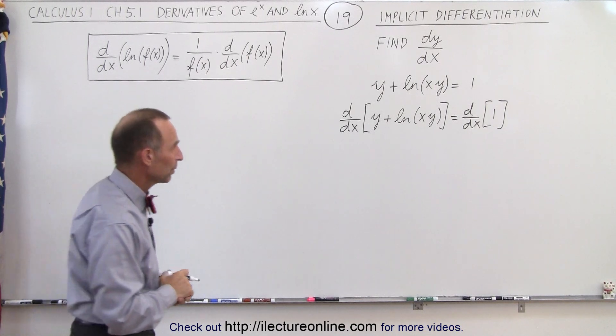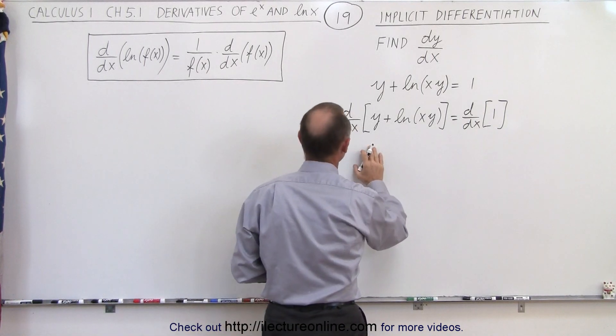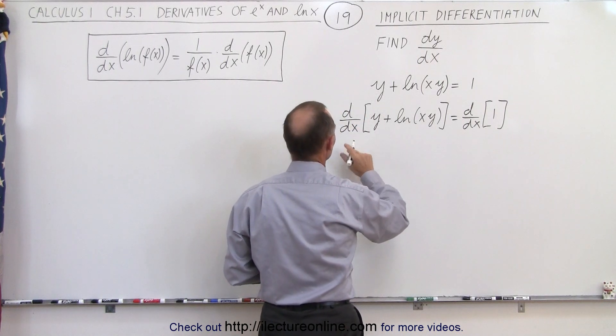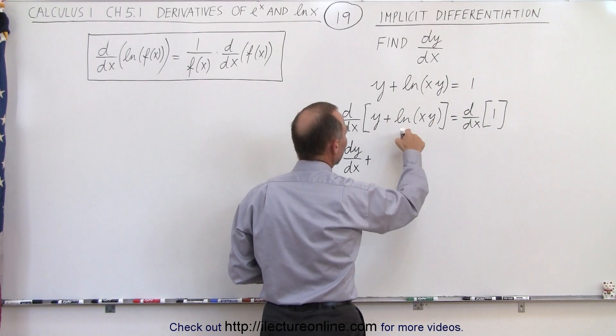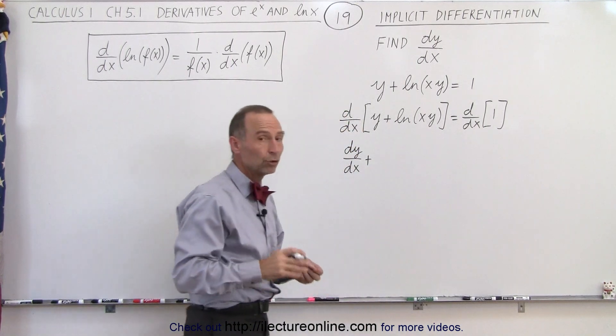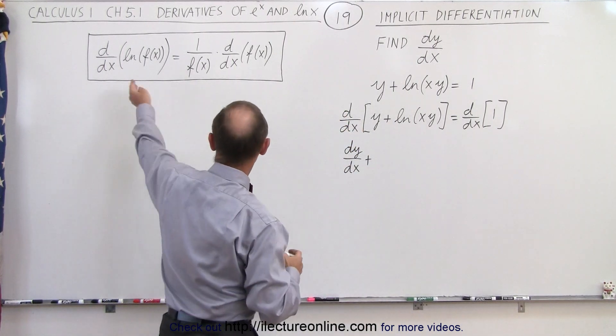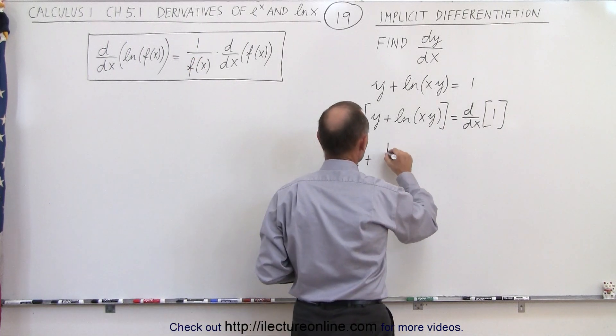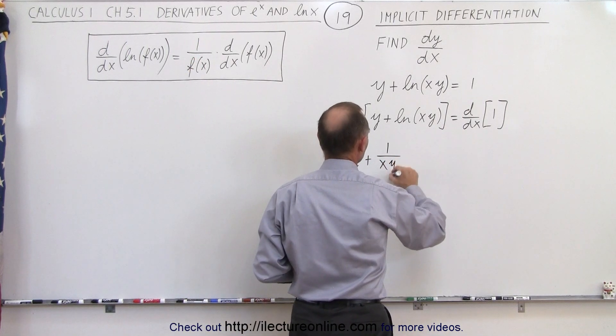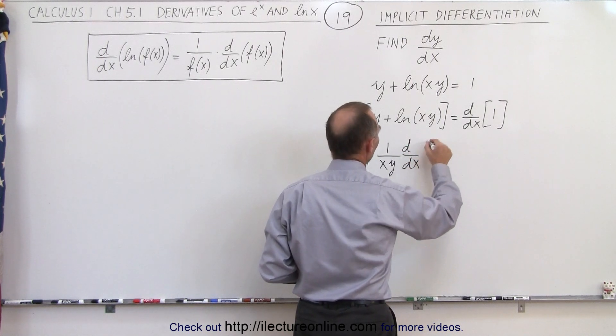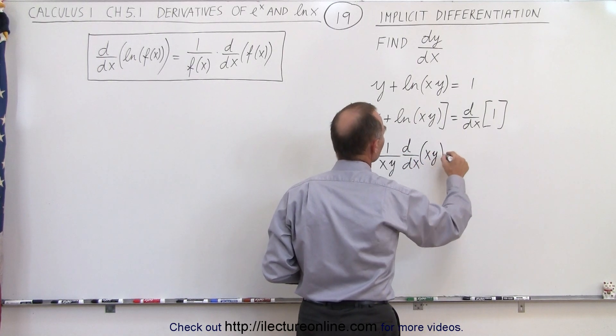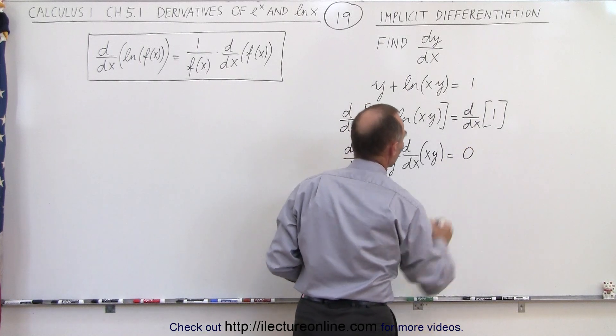But let's see what we end up with. When we take the derivative of the left side, well we have dy/dx plus the derivative of the natural log of x times y. Using the principle that we have, we go 1 over x times y times the derivative, and let me write it out, the d/dx of x times y. And that equals 0 on the right side.